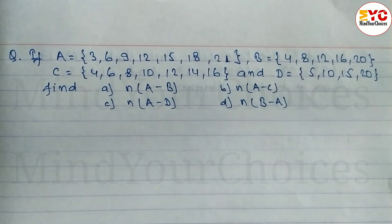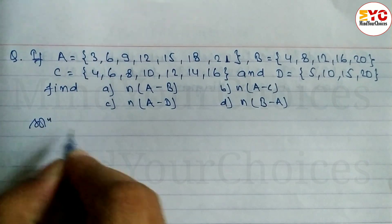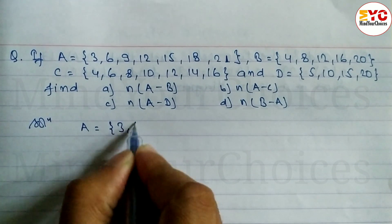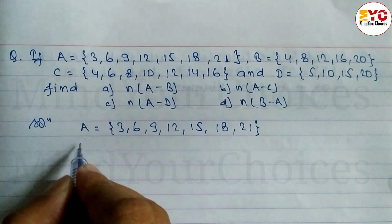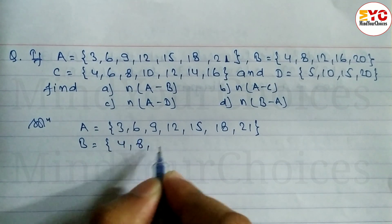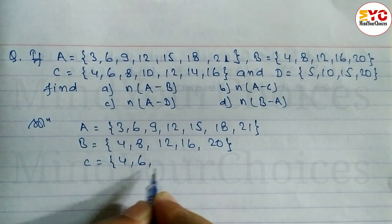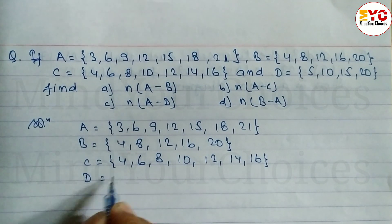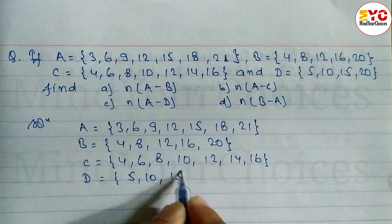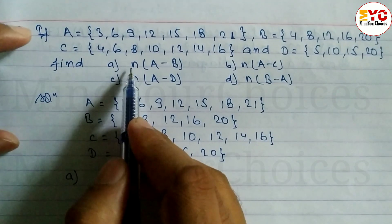Hello everyone. In this video we will learn how to find the difference of a set and find the cardinality of a set. We have four sets: set A is equal to {3, 6, 9, 12, 15, 18, 21}, set B is equal to {4, 8, 12, 16, 20}, set C is equal to {4, 6, 8, 10, 12, 14, 16}, and set D is equal to {5, 10, 15, 20}. In part (a) we need to find the cardinal number of A minus B.